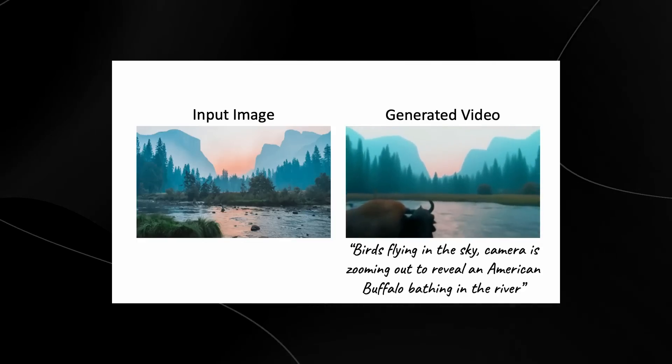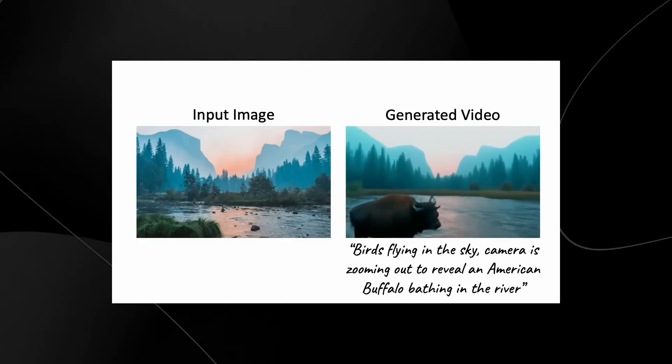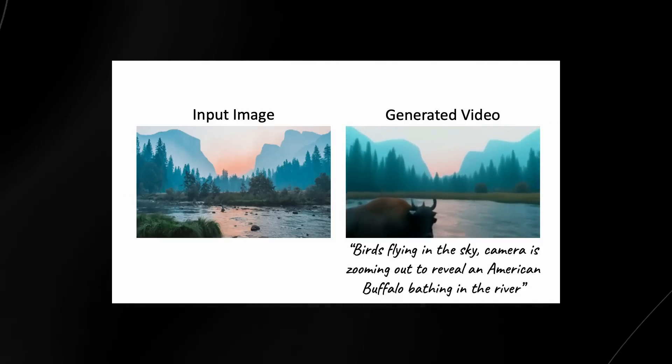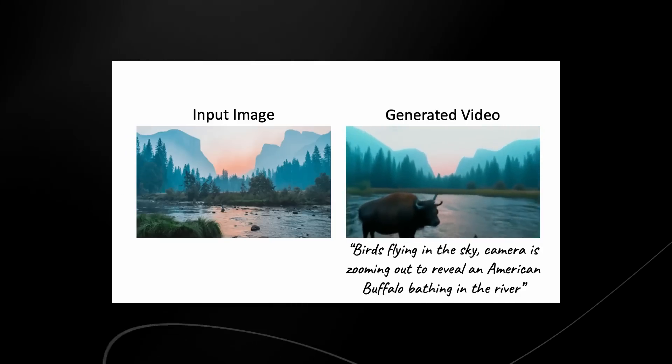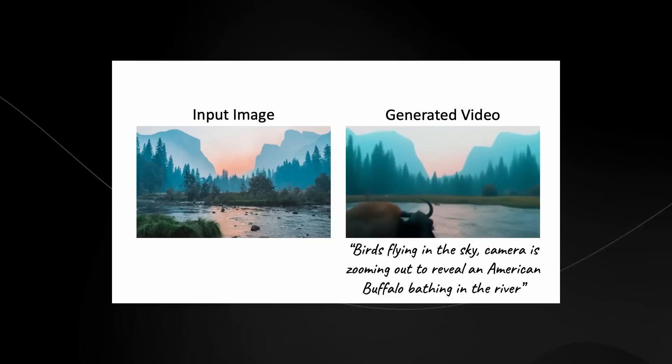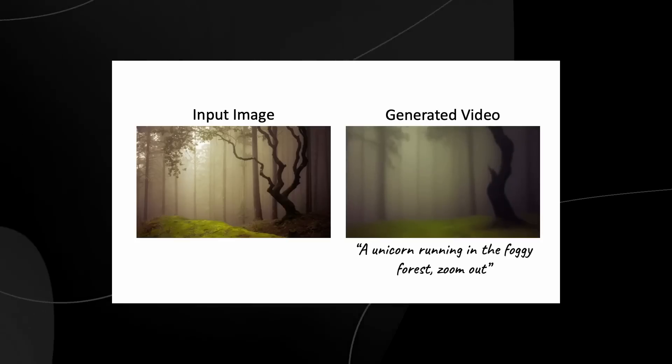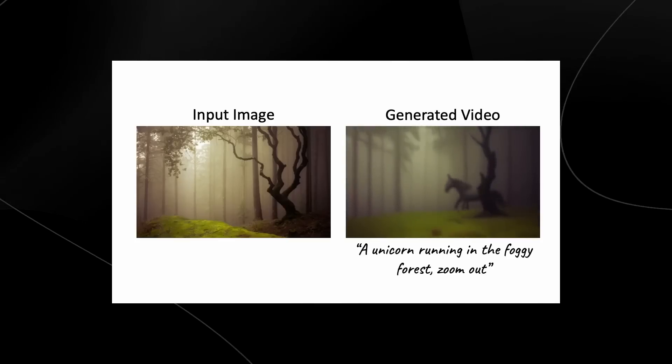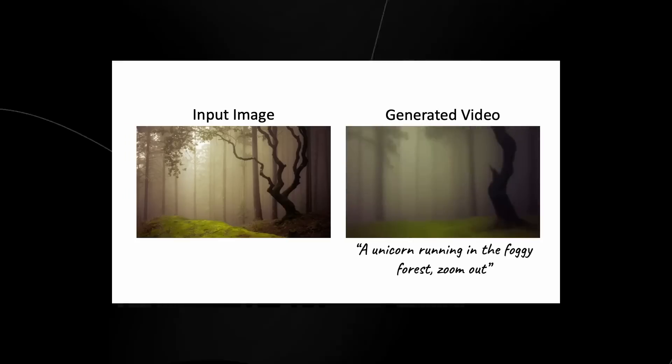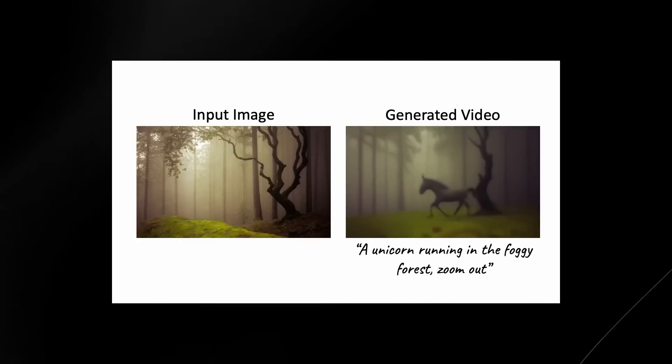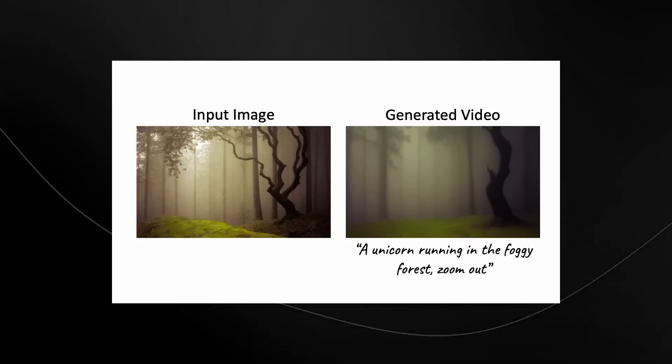We have one here which showcases how you can actually zoom out on certain images, create different landscapes, different perspectives. It's really, really interesting to show the dynamic fluidity of these models and just how accurate they really are at depicting exactly what we want with the text prompt and with the input image. You can also see right here a unicorn running in the foggy forest whilst zooming out. That definitely does look really, really realistic and accurate. And I only have one question right now, which is when is Google going to release this to the public?